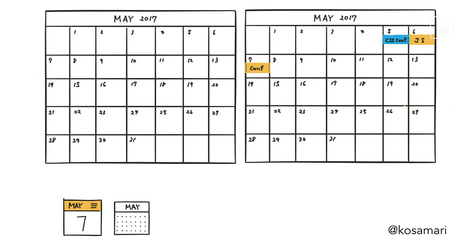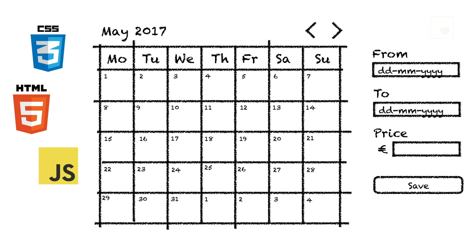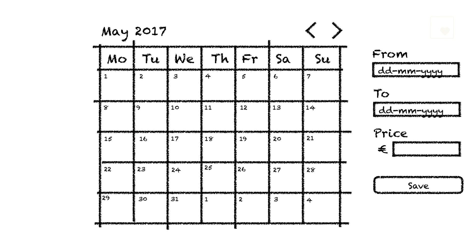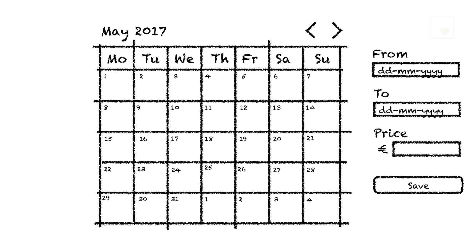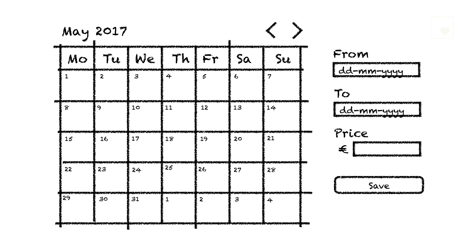So we decided to change our calendar. We did some user research about what we wanted to do, then started implementation with some sketches. We also used Perl at Booking.com, so we had some Perl code that you don't really want to touch a lot of, so we just tried to use the code that was already there. And that was it for the calendar.